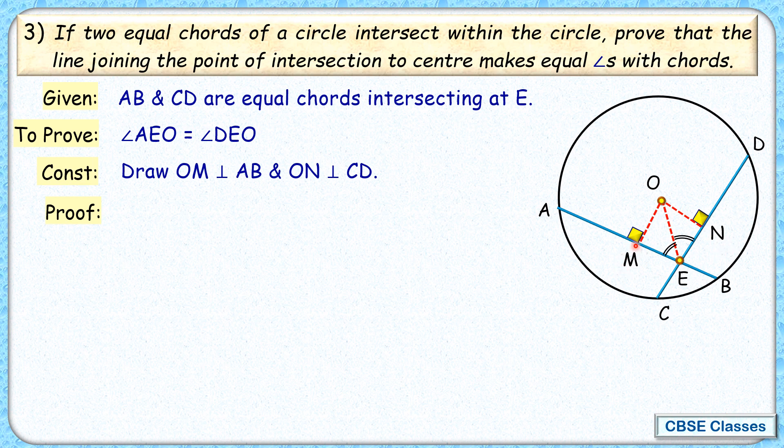Let's check the proof of it. Now if we will consider this triangle OME and triangle ONE. Now in these two triangles this angle M is 90 degree, N is 90 degree. So we can say angle OME and angle ONE, they are equal. Why they are equal? Because they are each of 90 degrees.